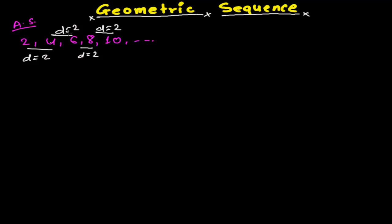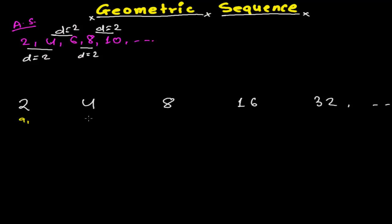Now let's learn about geometric sequence. It's a little bit like arithmetic sequence but with some differences. Suppose I have a sequence 2, 4, 8, 16, 32 and so on. Let's call these a1, a2, a3, a4, and a5 — the first through fifth terms.